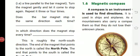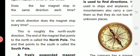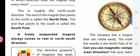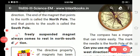In which direction does the magnet stop every time? So it helps us find the direction, north and south direction. Always remember, the end of the magnet that points to the north is called north pole. The end of the magnet that points to the south is called south pole. A freely suspended magnet always comes to rest in north and south direction.